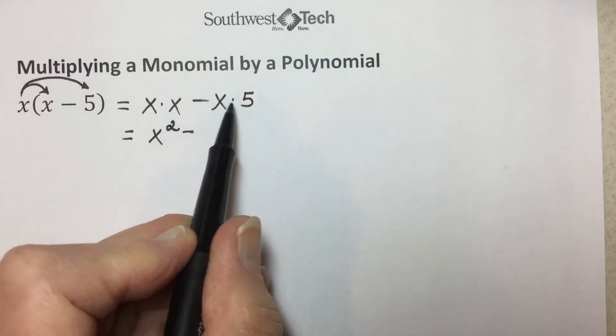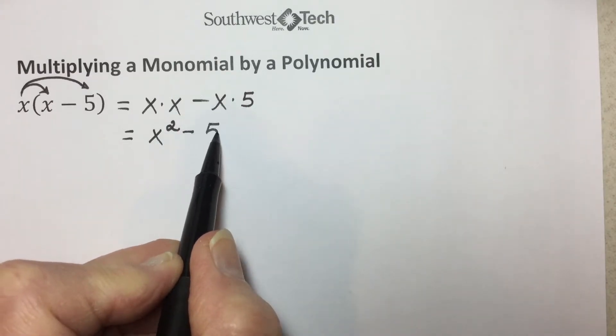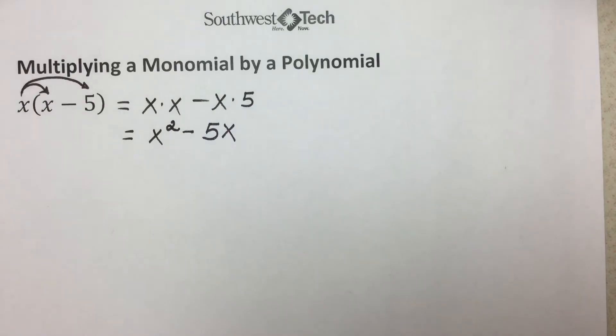And in our second term, x times 5, typically we put our constant term first followed by the variable.